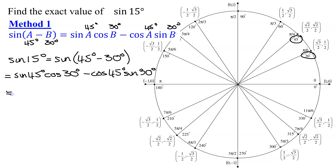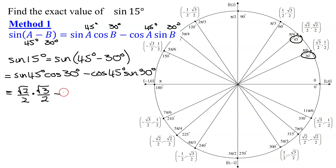Now all I have to do is find the values on the unit circle. Remember, the sine value is the y-coordinate. Find 45 degrees — the y-coordinate is the square root of 2 over 2. That is the sine of 45 degrees times the cosine of 30 degrees. Here's 30 degrees; the cosine is the x-coordinate, so it's square root of 3 over 2, minus the cosine of 45 degrees — the x-coordinate of that point — the square root of 2 over 2, times the sine of 30 degrees — the y-coordinate of that point — which is 1 half.